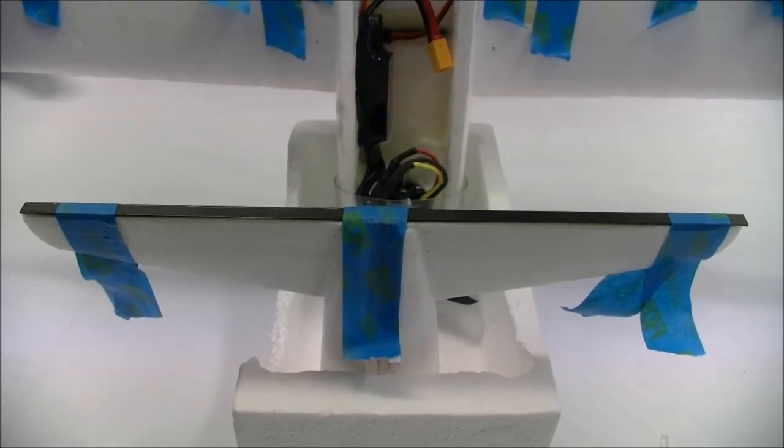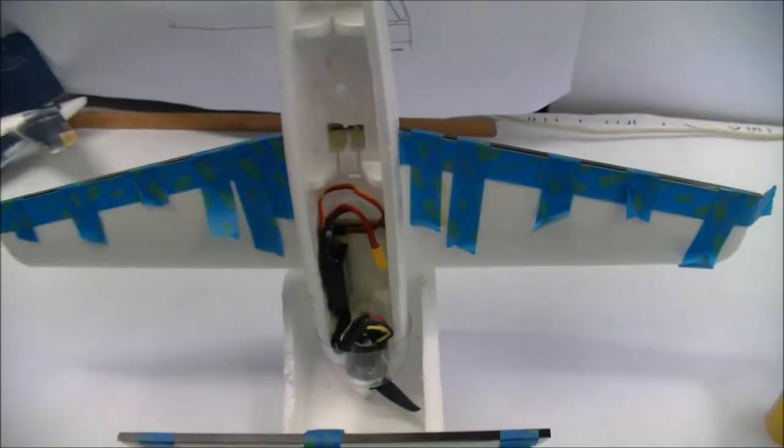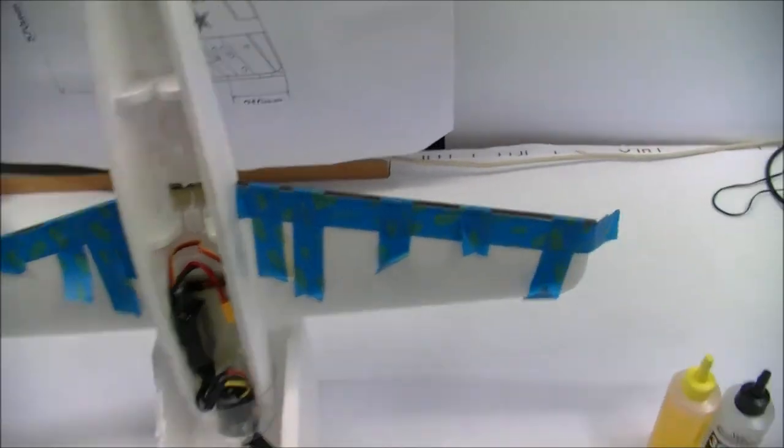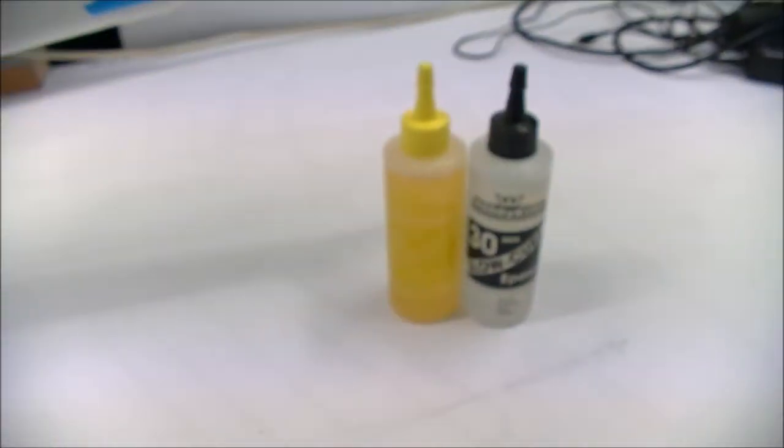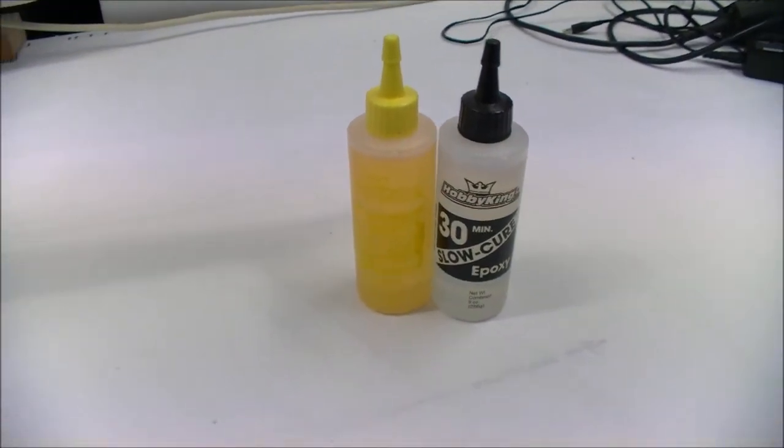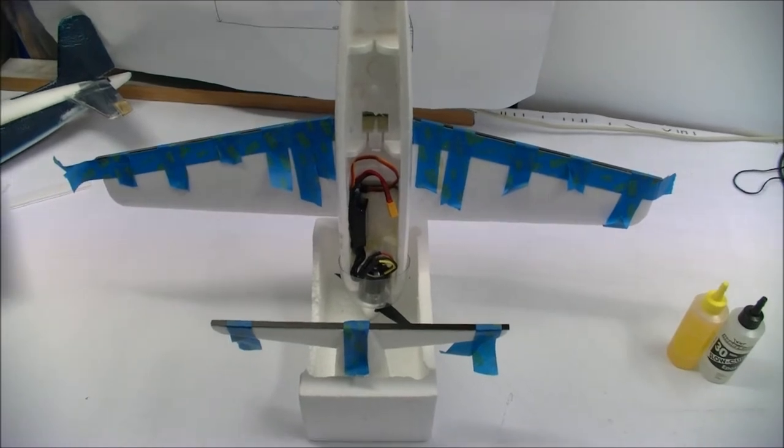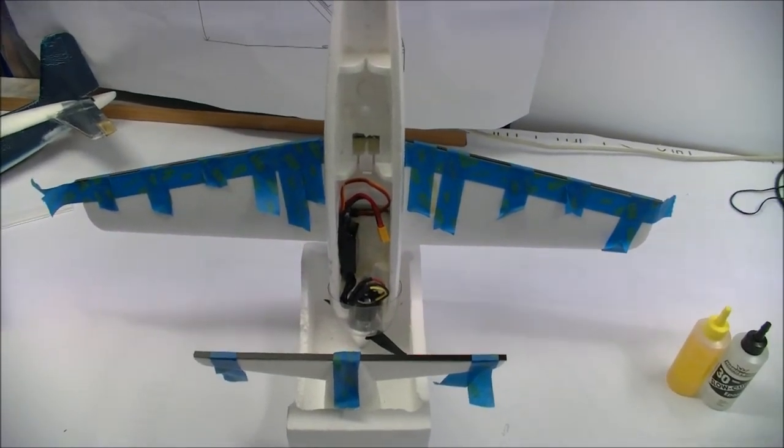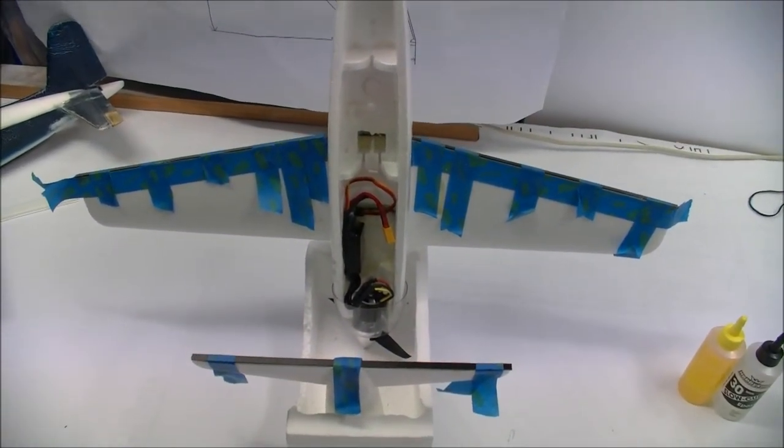I've just finished gluing the trailing edge spars onto the tail plane and onto the wing. If you look closely the spar on the wing goes all the way through into the fuselage and they cross-lap. And I've embedded it in epoxy to create a spar box. The glue I'm using is just a 30 minute epoxy from Hobby King. The next step now is to manufacture the trailing edges for the tail plane and ailerons.